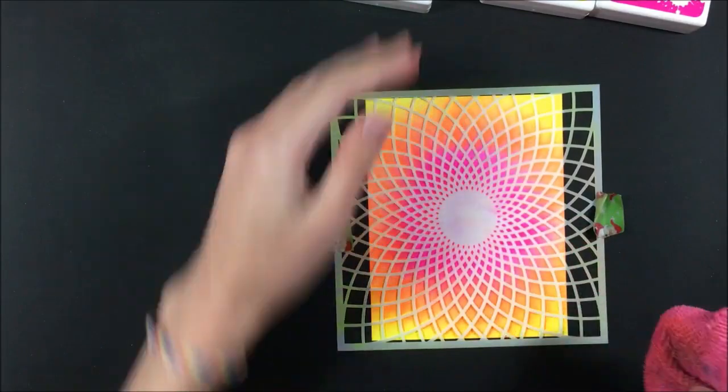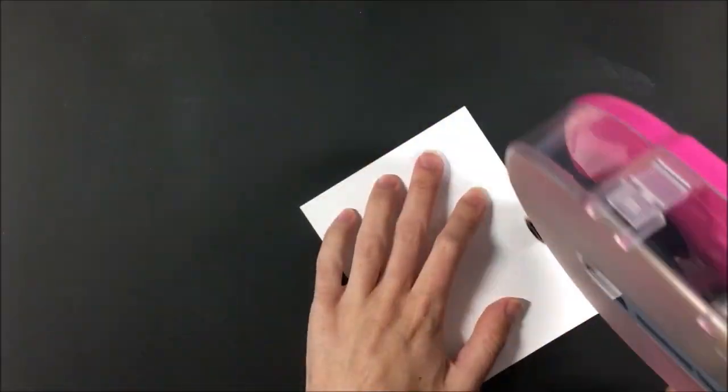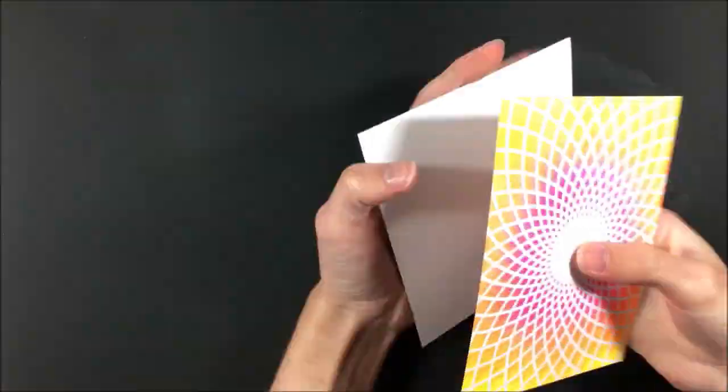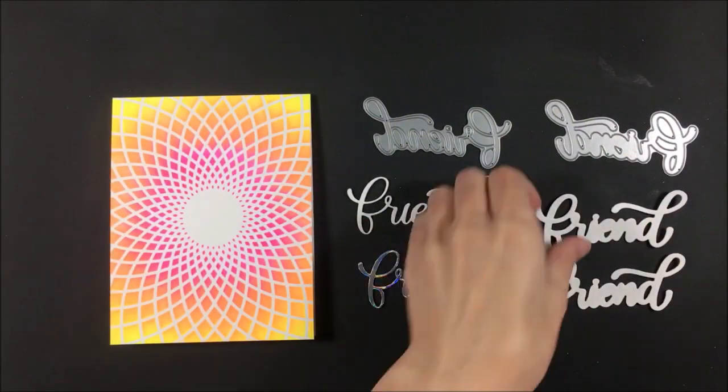I did wipe it with my cloth because I was thinking I might put some sparkle paste or something on top but I decided against it. I'm then going to come in with my ATG and apply some adhesive to the back and pop that onto my card base before I go ahead and do some die cutting.